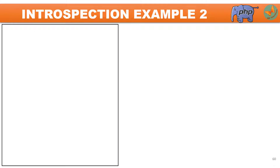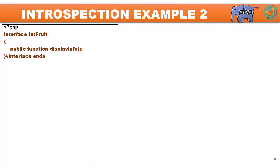To see how all these methods work, I have created one program. First, I have declared one interface called int_fruit. As you may recall, an interface is nothing but a pure abstract class, so only method definitions are present with no body. Here I am going to declare only one method called display_info, which will be implemented in the child class. For implementing this method, I am going to declare one class called fruit which implements this interface int_fruit.